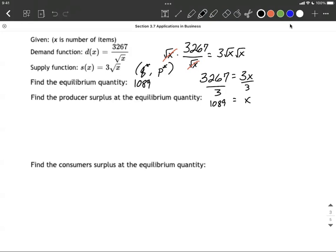Now if I want to find that price that goes along with this quantity, I can go ahead and fill into either one of these functions. We'll get the exact same answer. I'm going to choose to use the supply function, so the supply function evaluated at 1089 is going to be 3 multiplied by the square root of 1089, which works out to be 99.